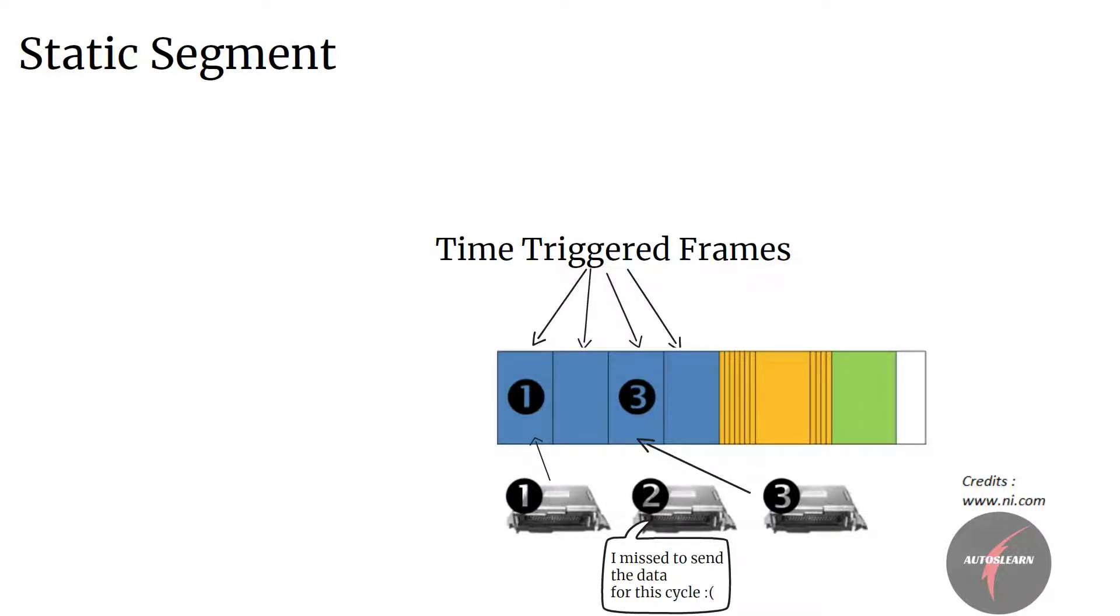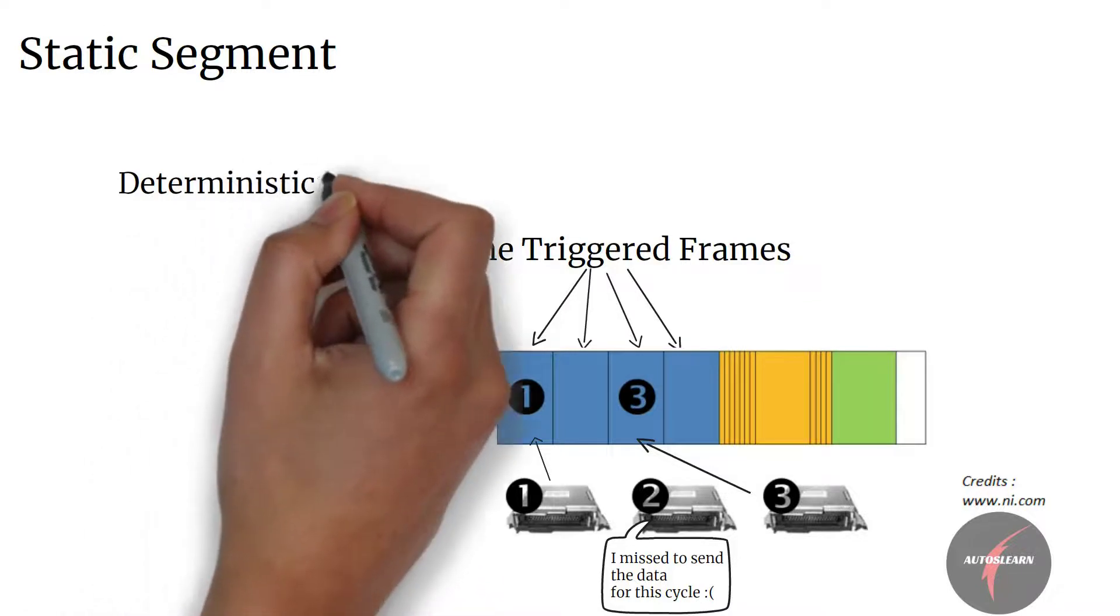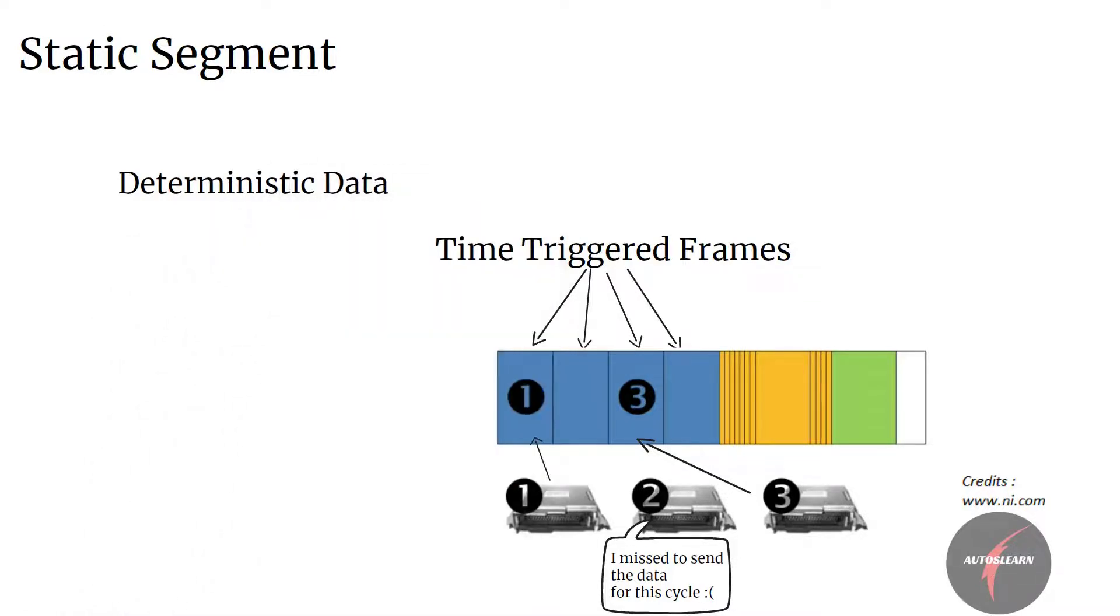Since the exact point in time is known in the cycle, the data is deterministic and each ECU knows exactly how old the data is in the network. For example, ECU 1, 2, and 3 have reserved their slot in the static segment. So in case if any ECU goes offline, then the slot will still be reserved without any data being transmitted in the slot.